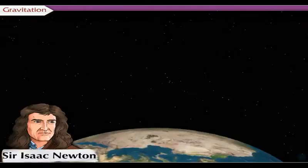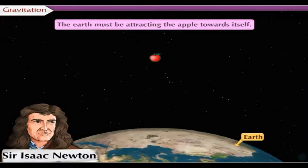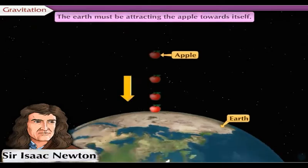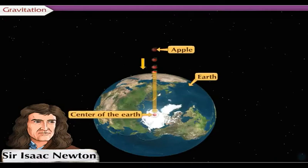After careful consideration, Newton drew the conclusion that the earth must be attracting the apple towards itself and this attractive force must be directed towards the center of the earth.